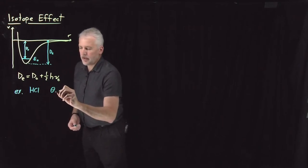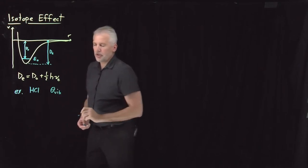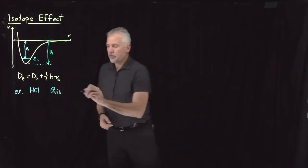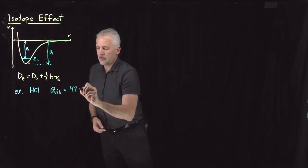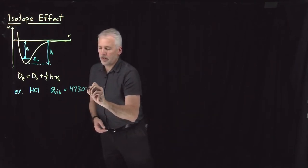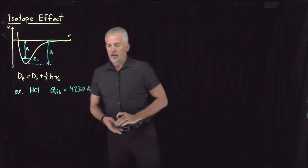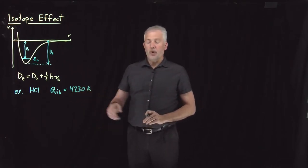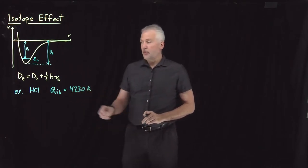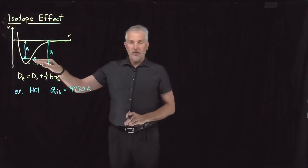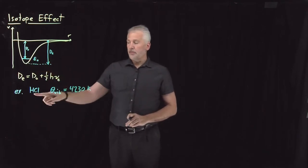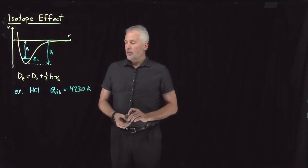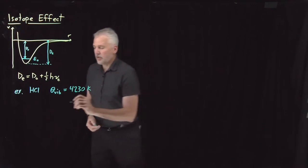The vibrational temperature of an HCl molecule is 4230 Kelvin. That number being much higher than room temperature tells us that it's a very quantum mechanical molecule. The zero point energy is relatively large — the light mass of the hydrogen makes this a very quantum mechanical molecule.